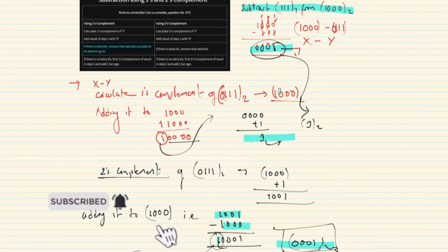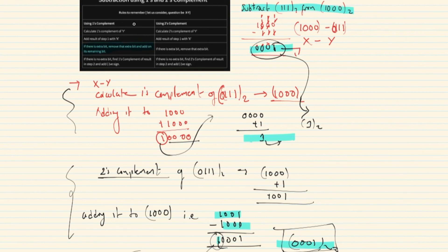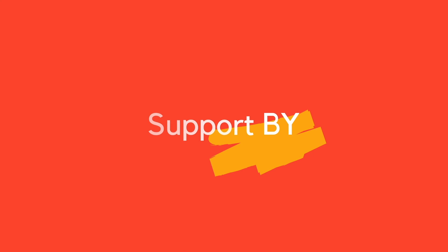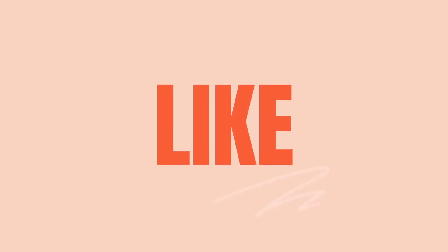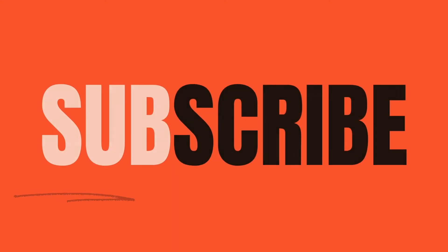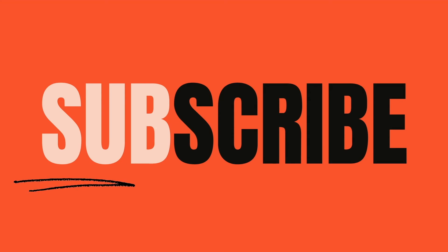Once complement and two's complement are both used — simply binary subtraction is done this way. You can understand the rules. Please practice it.